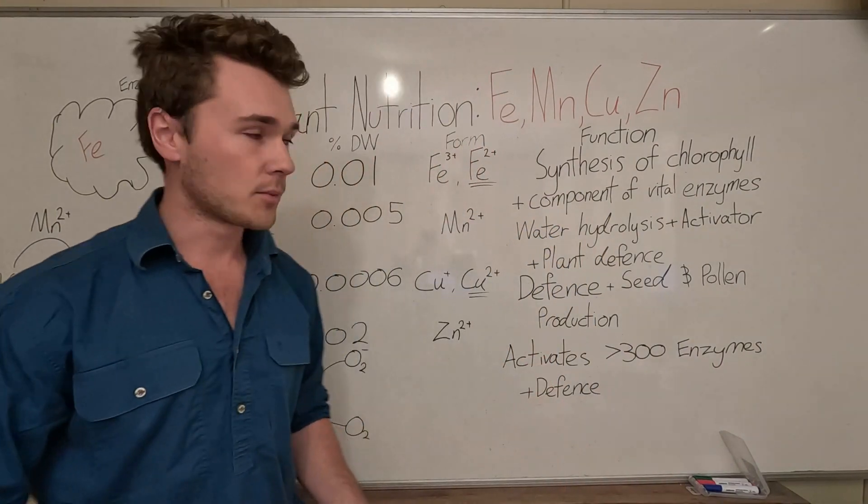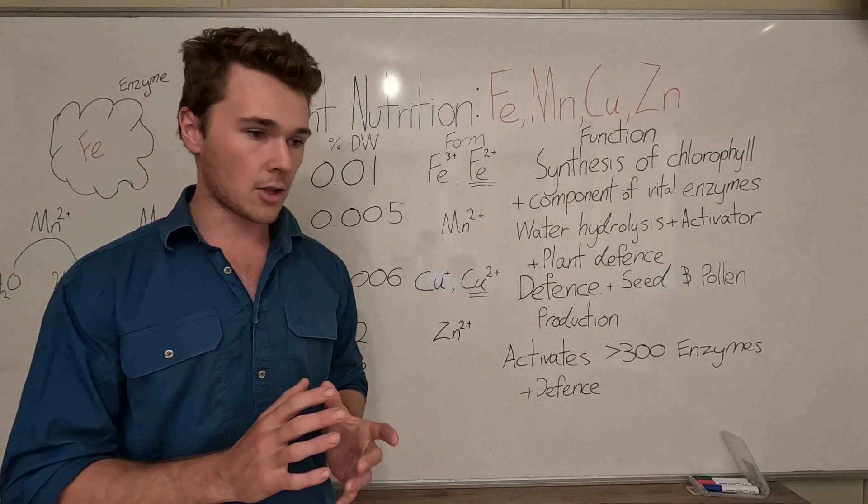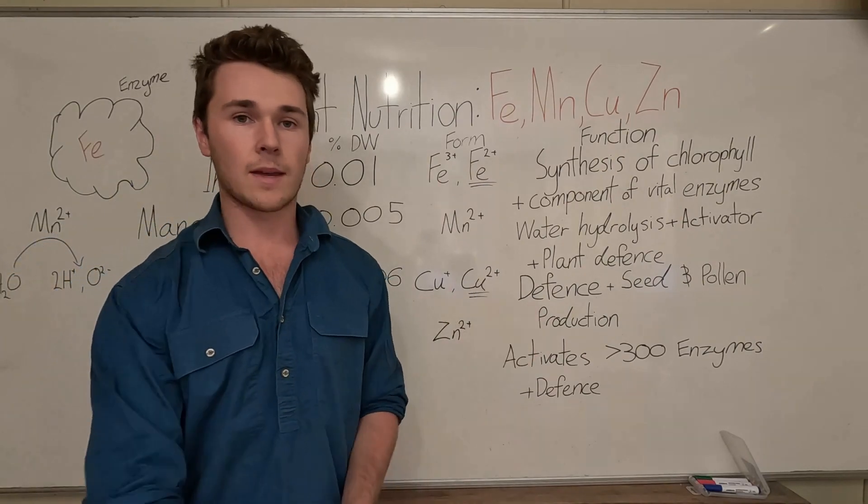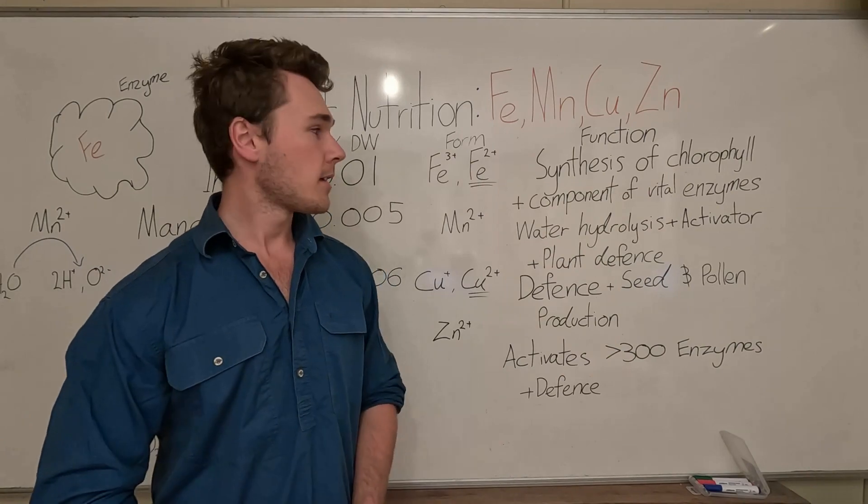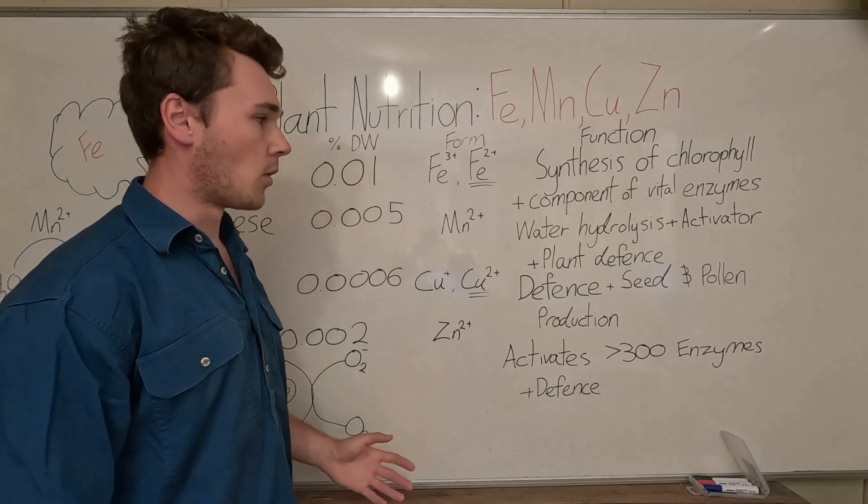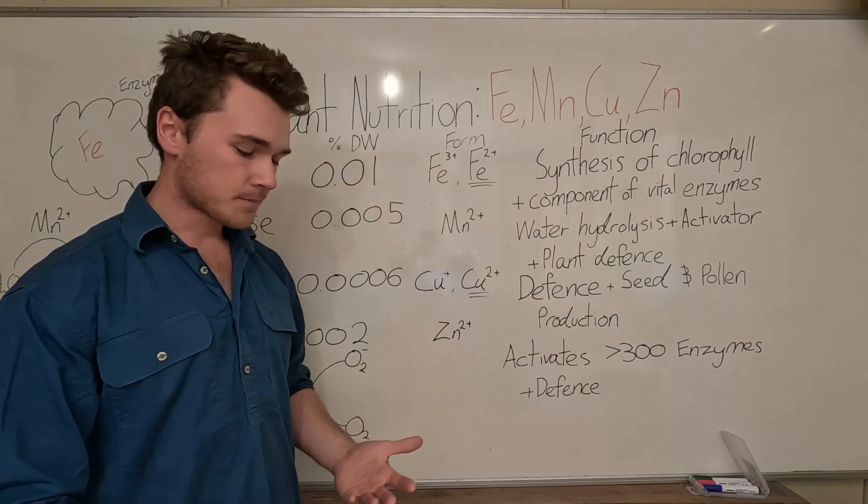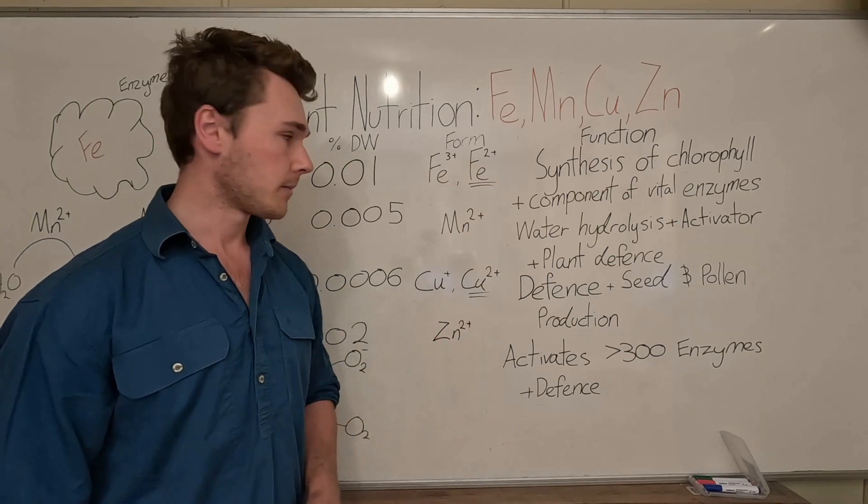In terms of how the plant absorbs this, iron is a metal and so typically metals have a lot of oxidation states which means the amount of electrons on the atom changes and there's a very wide range that this can happen in.